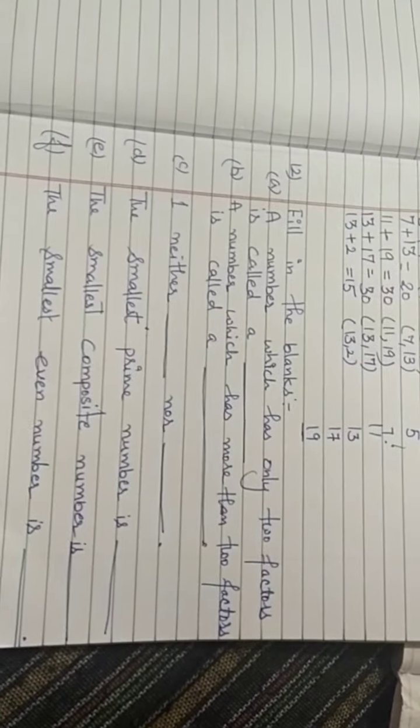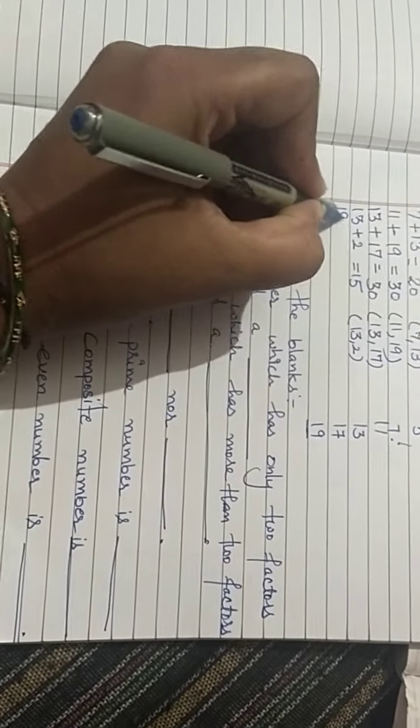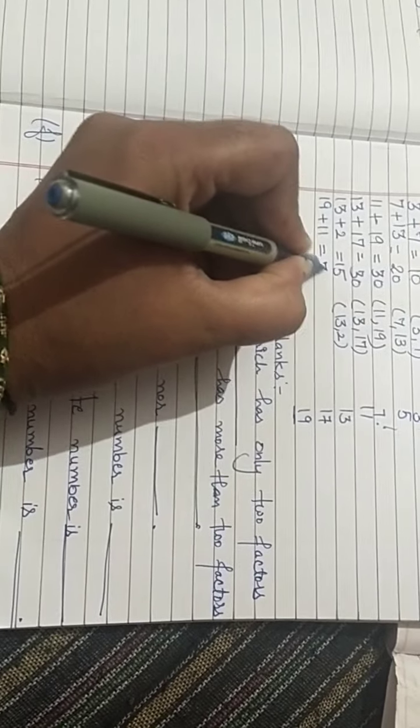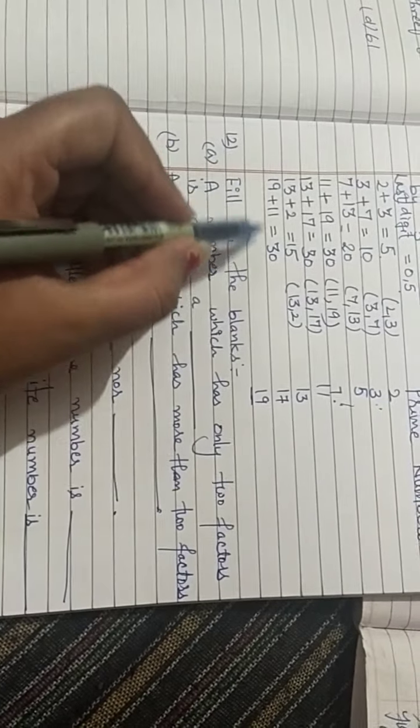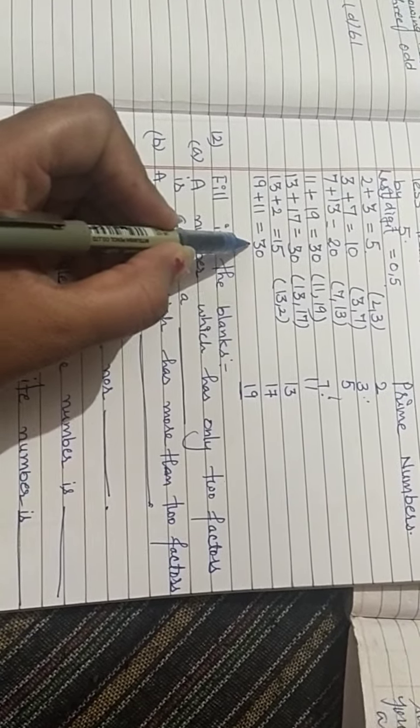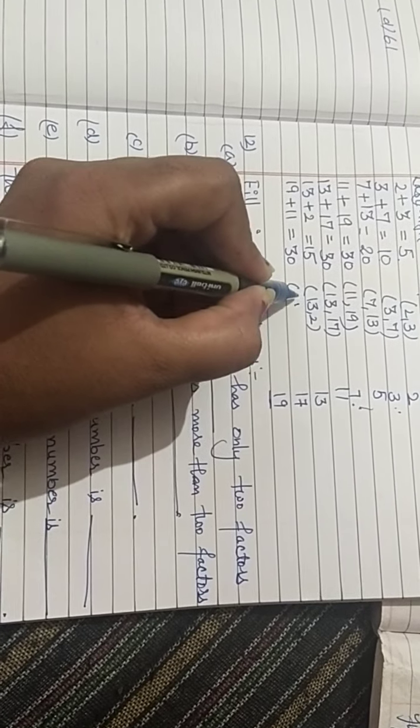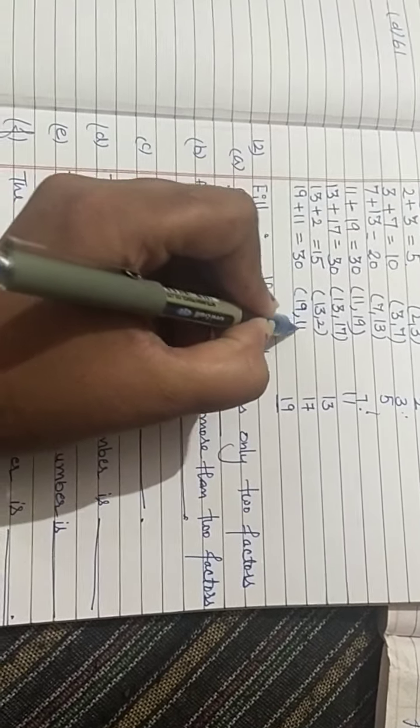Next is 19. In 19 add 11, then we get 30. This also comes in table 5. Then pair is 19 and 11.